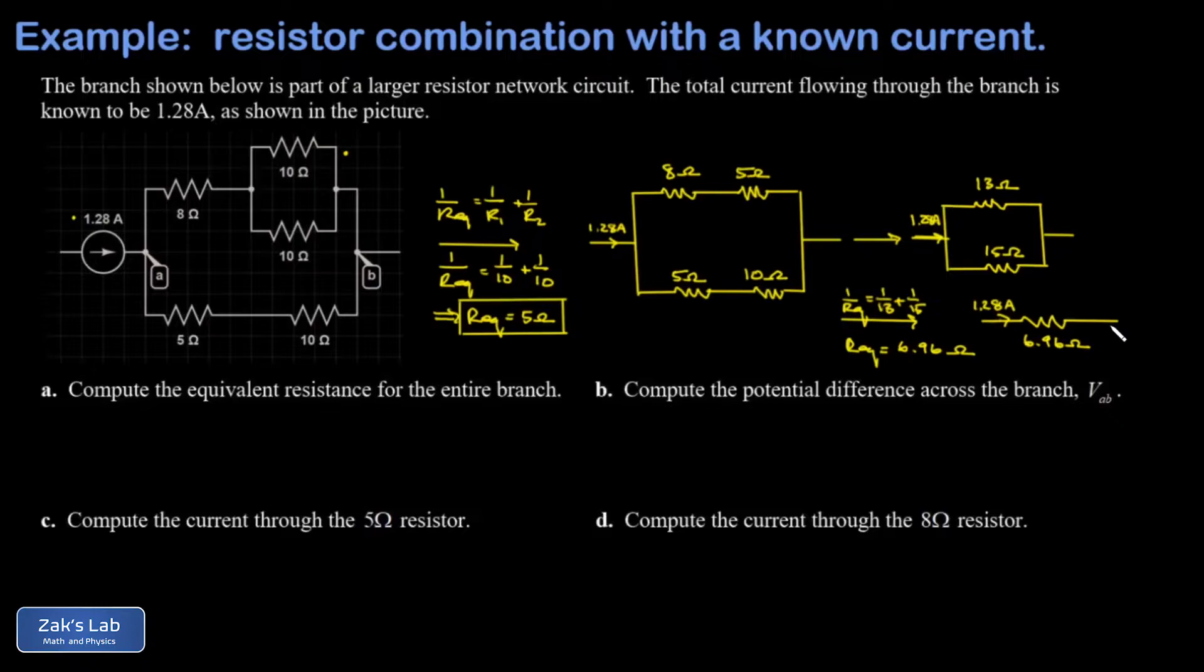Now when we redraw this branch we have a single 6.96 ohm resistor with 1.28 amps flowing through it. So this answer is part A: the total equivalent resistance is 6.96 ohms.